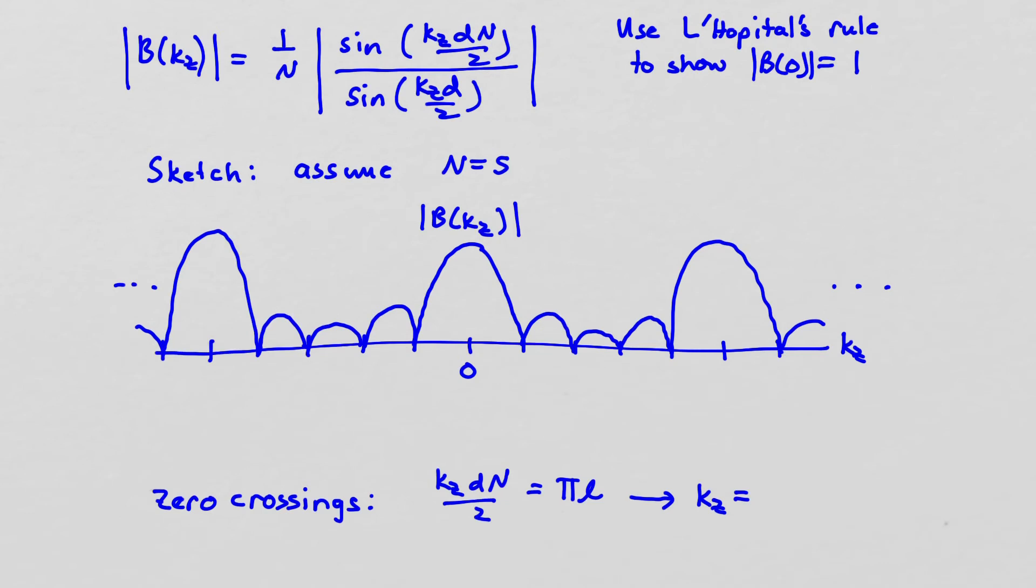Now what I want to focus on is if I want to do an easy plot of this, what does the magnitude look like? So this is the magnitude, all the terms that contribute to the magnitude. And for my sketch down here, I've assumed that big N is equal to 5. And so what I want to do, I've sketched what this discrete sinc will look like for that. First, I'm going to make a couple of comments. I can show, using L'Hopital's rule, at kz equals 0, this is going to be equal to 1. So I have a magnitude here of 1. So b of 0 is equal to 1. I show that using L'Hopital's rule, and that's good to know.